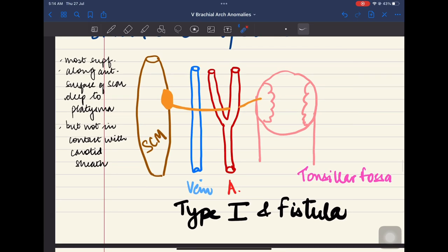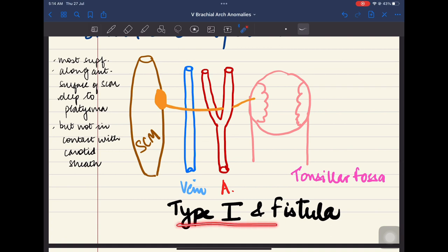Now what is the type 1 Bailey's classification? In this, it is the most superficial. It lies along the anterior surface of sternocleidomastoid muscle deep to platysma. But it is not in contact with the carotid sheath. Sometimes the fistula opens in the tonsillar fossa.